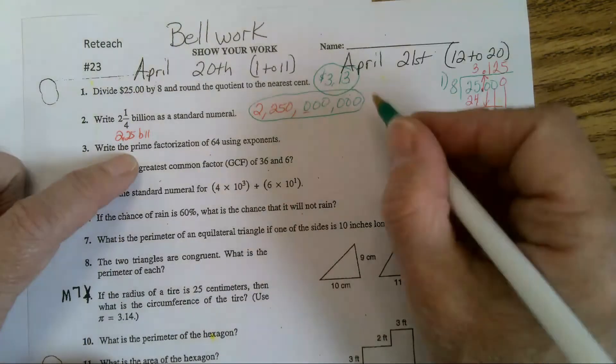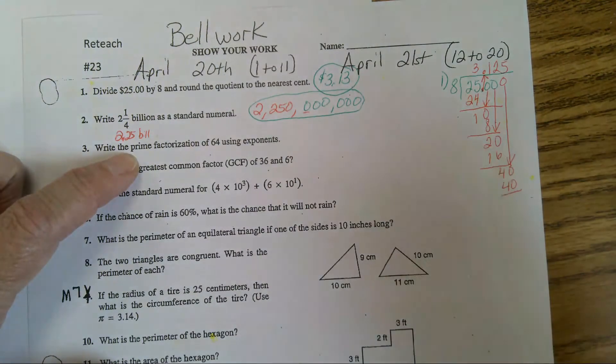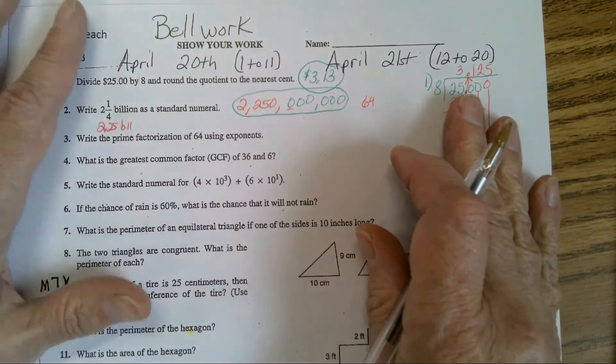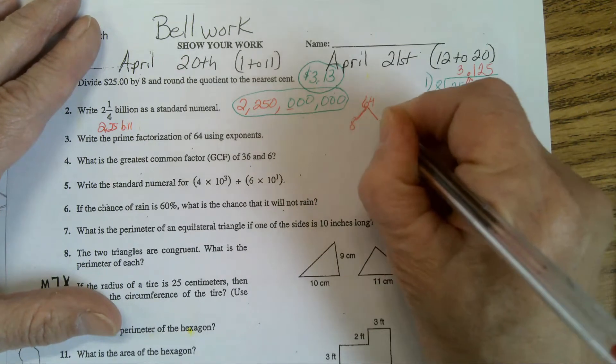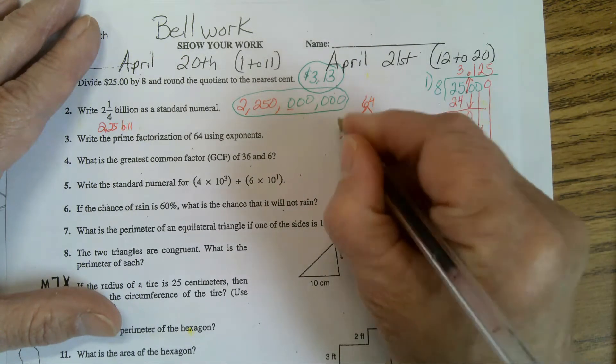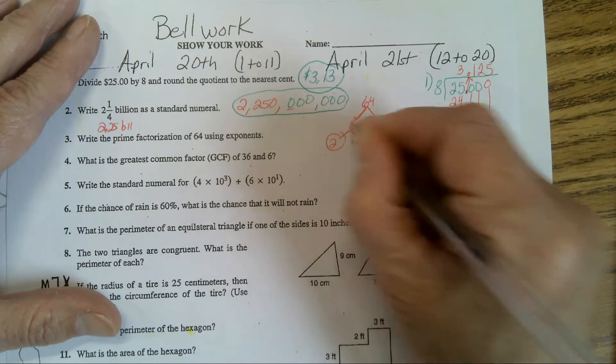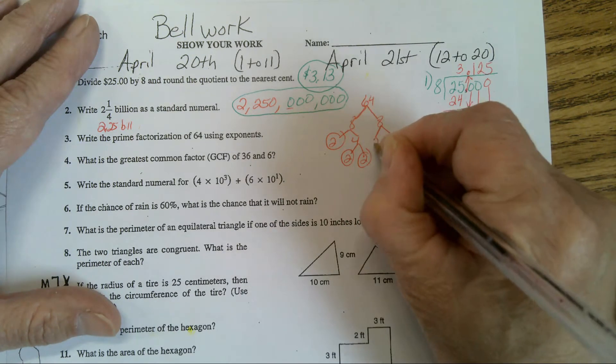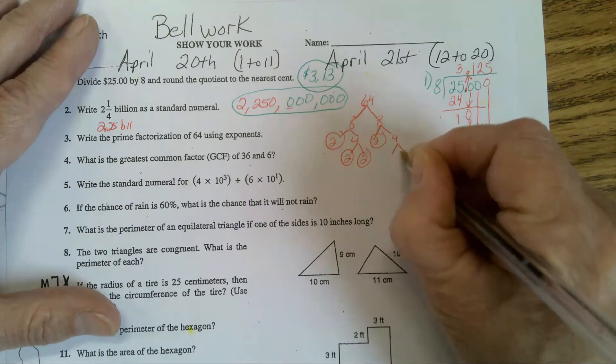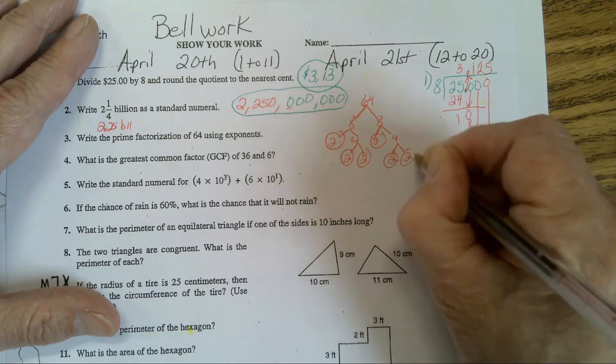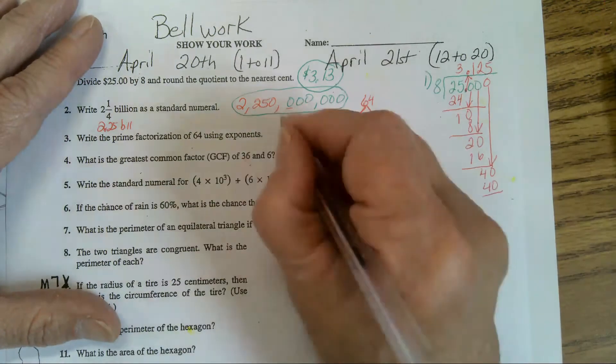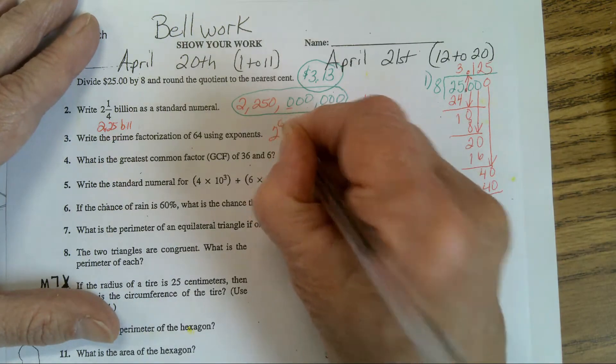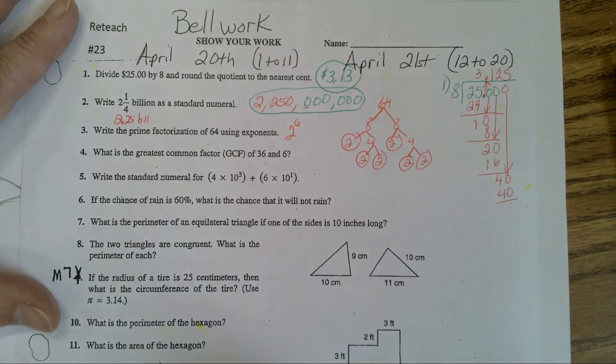Prime factorization for 64. On this problem, I'm going to use the tree method as opposed to the box method. What times what is 64? 8 times 8. Now I'm going to break it down 2 times 4. 2 is prime. 4 breaks down into 2 times 2. Here again 2 times 4. So using exponents, it's going to be 2 to the 6th power.